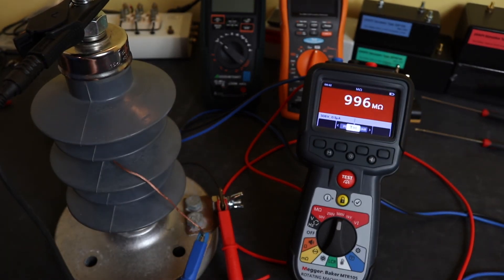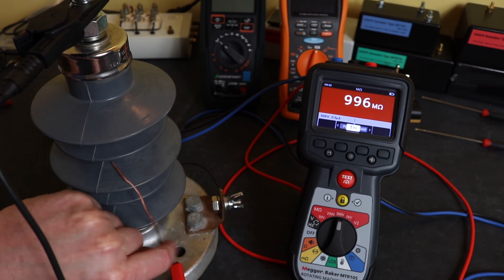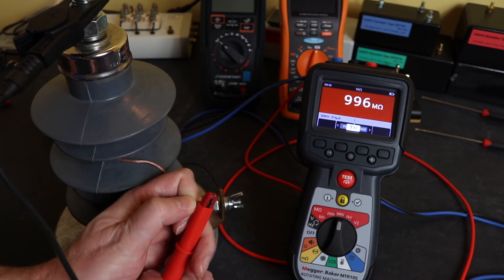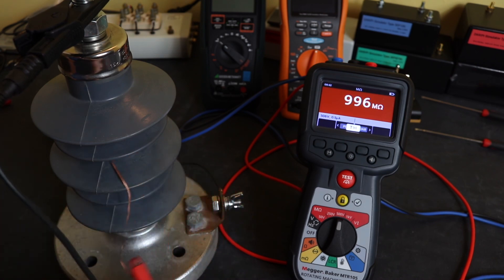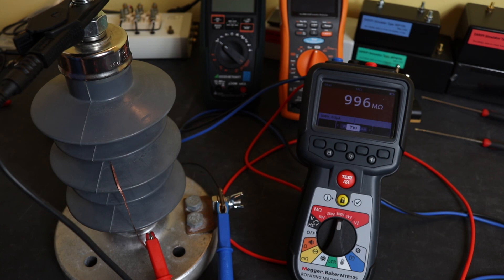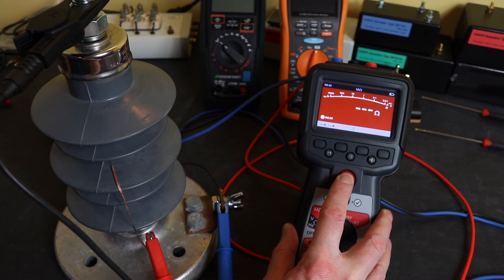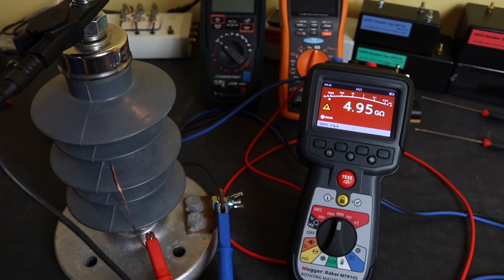To actually confirm that, what I can do is change this configuration and swap over my connections. Now put the insulation test across the bushing and put the guard terminal onto the chassis. Now I should just be megger-ing the insulation resistance there and that should be a 5 gigaohm resistor that I put in there. You can see we're at 4.95 gigaohms. That's an indicator of the leakage across the surface of the bushing and can tell you the condition of the bushing.